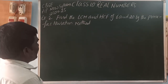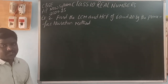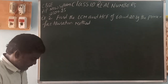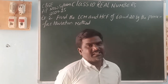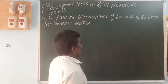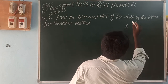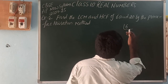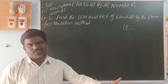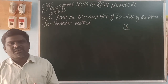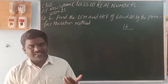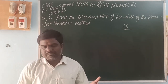Next, find the LCM and HCF of 6 and 20 by the prime factorization method. Prime factorization means writing the number as a product of prime numbers. The prime numbers are 2, 3, 5, 7, 11, 13, 17, 19 and so on. A prime number is a number having no factors except 1 and itself.